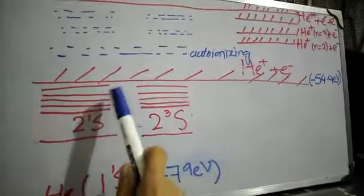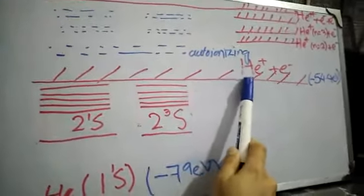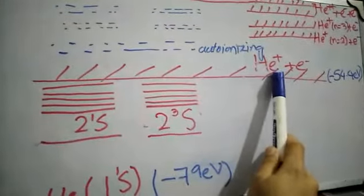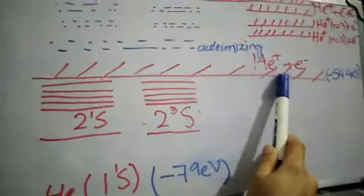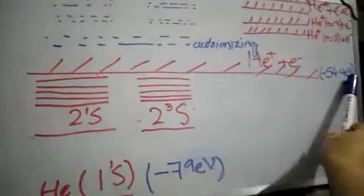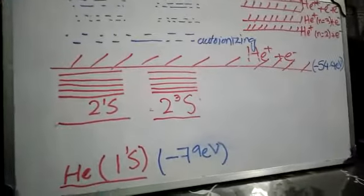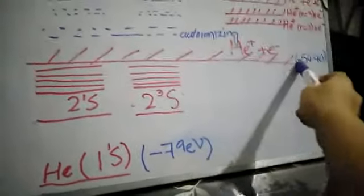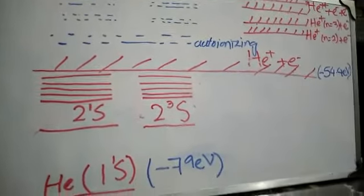We can see that it is generated by these states. Because of the singlet and triplet, you have two different levels. However, the two energies are the same. Now it is showing that the two electrons will change, but here one electron is in ground state. When one electron is emitted from here, this means that the first ionization will be knocked out. This corresponds to the energy minus 54.4 electron volts.